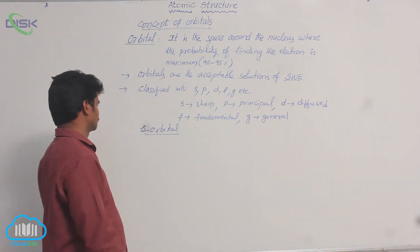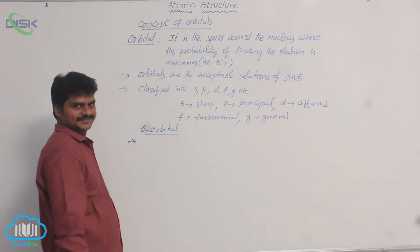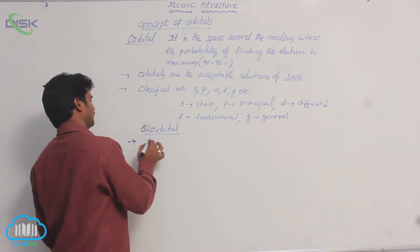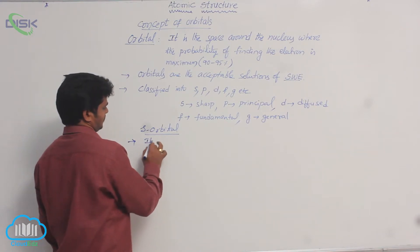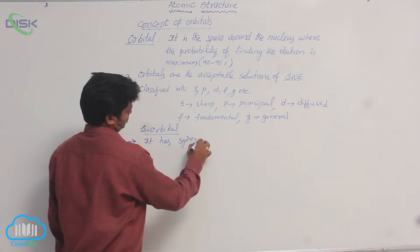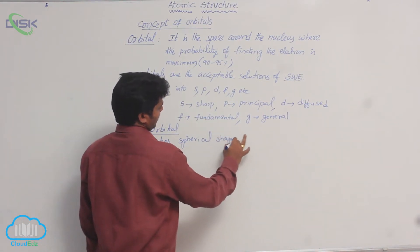S orbital. What is S orbital? What is its shape? You know, S orbital has a spherical shape. An S orbital has a spherical shape.